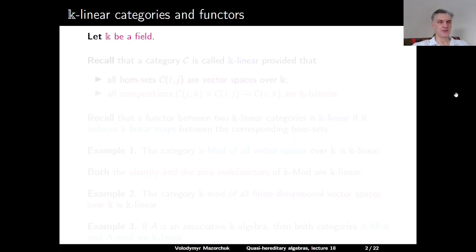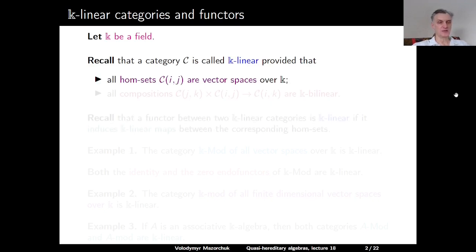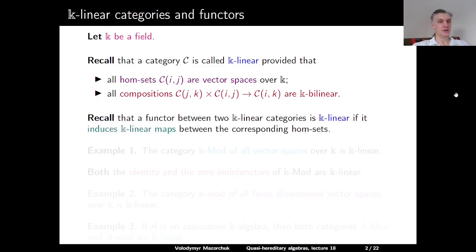Let k be a field. Recall that a category C is called k-linear, provided that all hom-sets between any pair of objects i and j in C — the hom-set C(i,j) — should be a vector space over k, and all compositions are k-bilinear maps. Recall that a functor between two k-linear categories is called k-linear if it induces k-linear maps between the corresponding hom-sets.